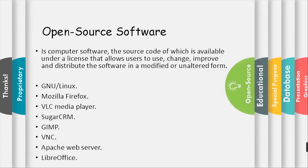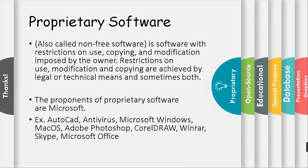Open Source Software is computer software whose source code is available under a license that allows users to use, change, improve, and distribute the software in a modified or unaltered form. Proprietary software, also called non-free software, is software with restrictions on use, copying, and modification imposed by the owner.